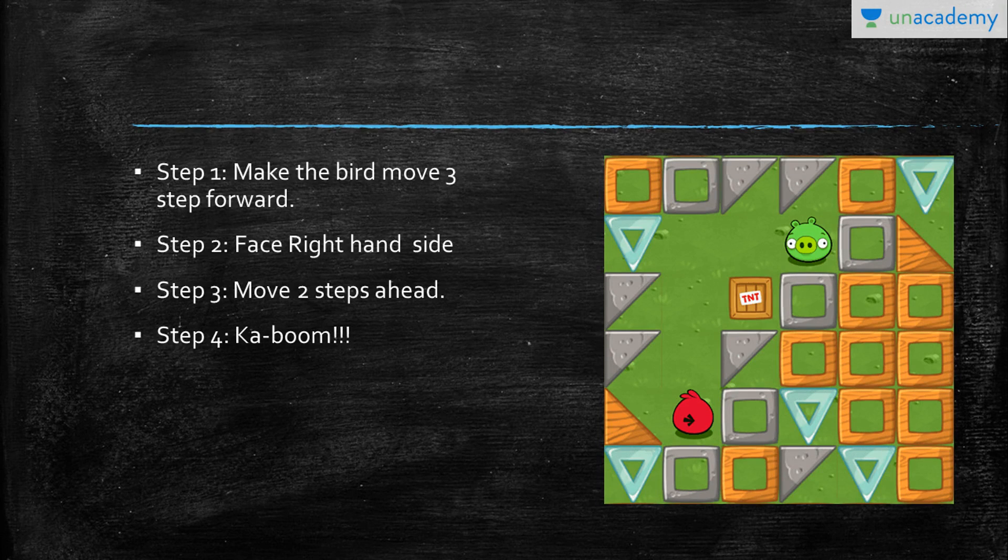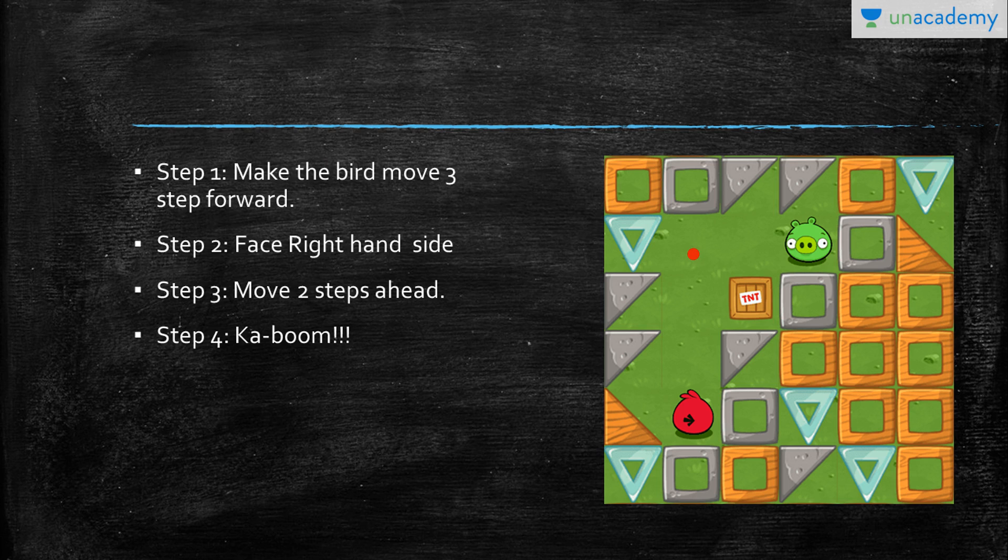We have our Angry Bird here, and we want to make it go further. One, two, three. The first thing we do is make our bird move three steps forward. When it is right up here, we want to make it face the right-hand side.